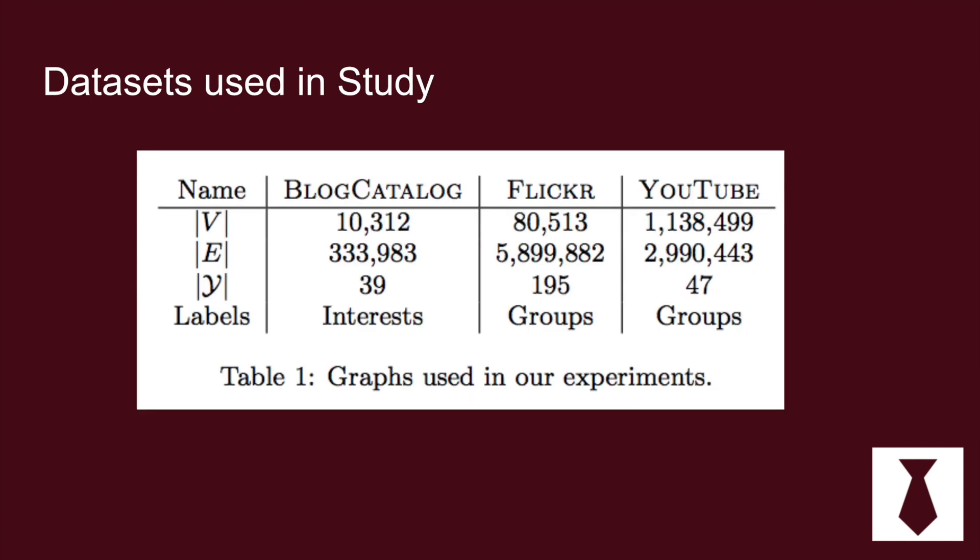So in their study the authors who came up with deep walk they tested it on blog catalog, Flickr, and YouTube and these are all social network data sets where users are connected to each other and they are labeled according to their interests like what kind of videos they're watching, what kind of photos they're sharing and these kinds of things.